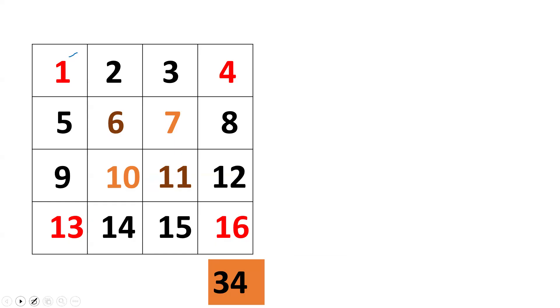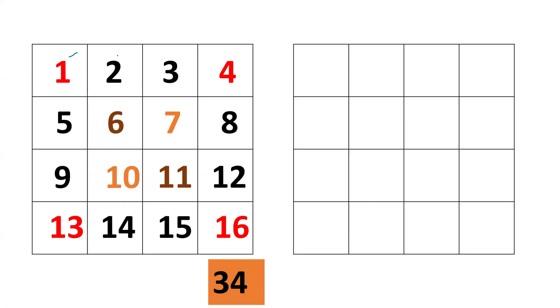Next what I do is I just take another square. And the numbers I have written in black, that is 2, 3, 8, 12 and 14, 15 and 5, 6, write it as it is in this magic square. That is I have written 2, 3 as it is, then 5, 8, 9, 12, 14, 15. That's all.